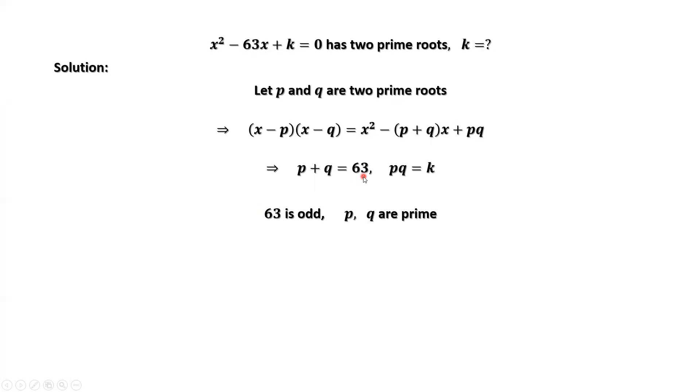63 is an odd number, p and q are prime. We claim one of p and q equals 2. Why? This number 63 is odd. One of p and q must be even. We only have one even prime number, which is 2. Therefore, one of p and q must be 2.